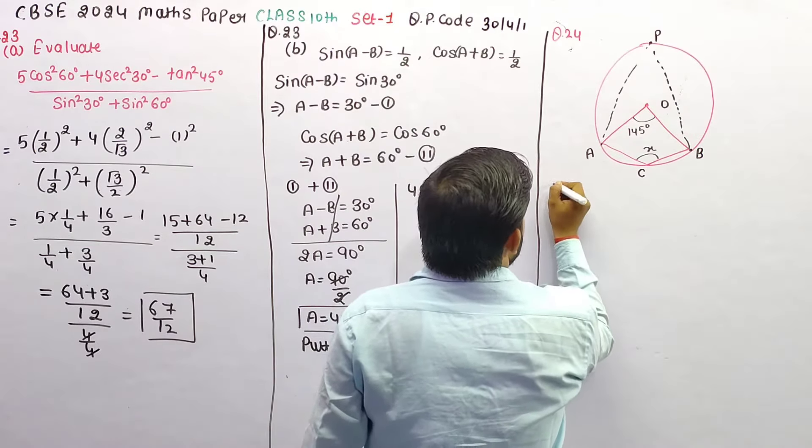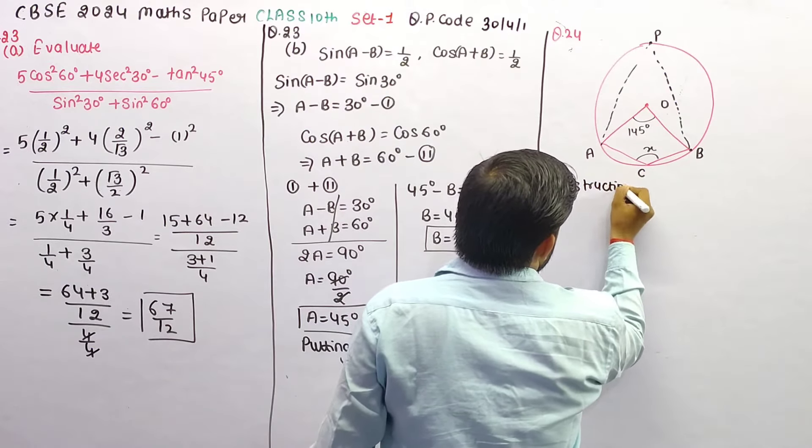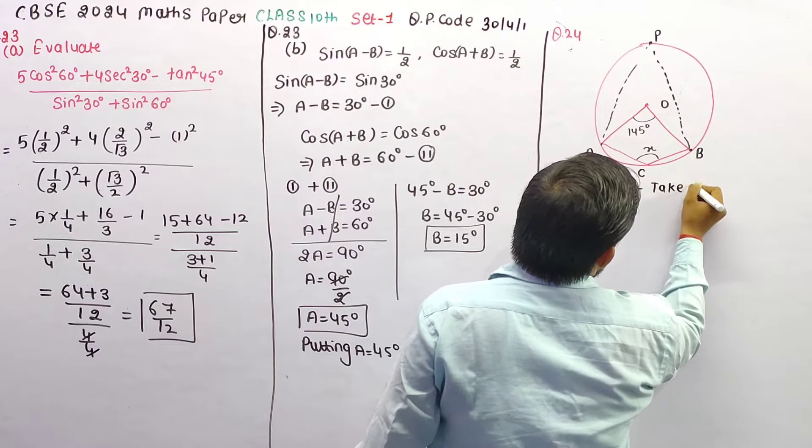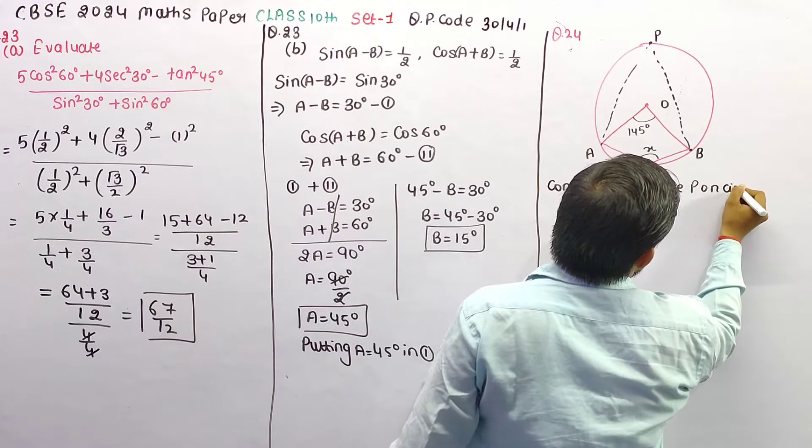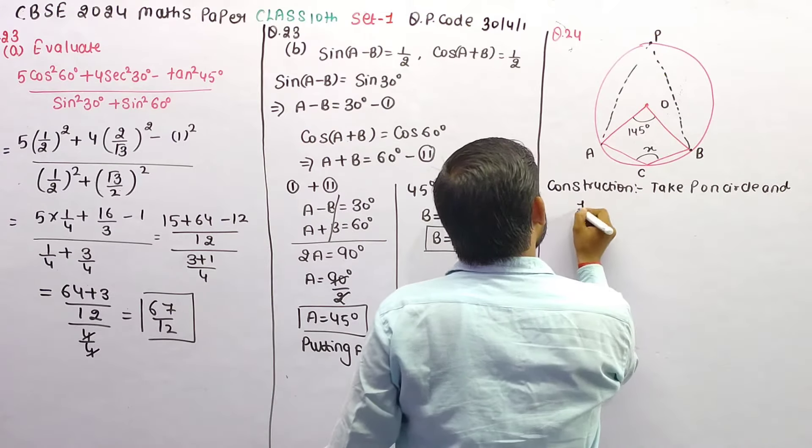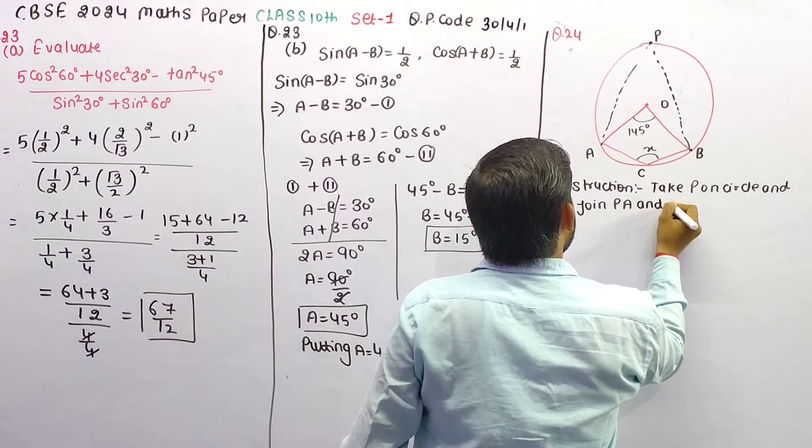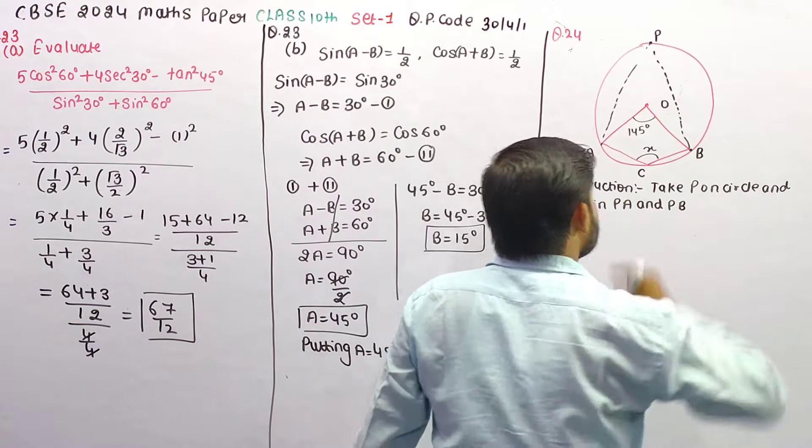Here we have construction. We have construction. Take P on circle and join P, A and PB.